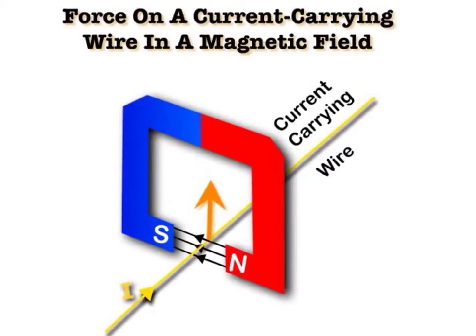And there's a rule for dealing with this, and the rule is called Fleming's left-hand rule. So, the left-hand rule allows us to determine the direction of the force on a wire carrying a current when it's in a magnetic field.